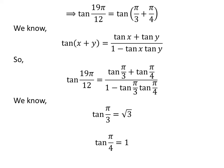As we know, tangent of pi upon 3 is equal to square root of 3 and tangent of pi upon 4 is equal to 1. So we plug in these values in the above expression.